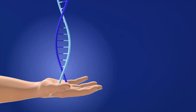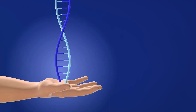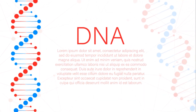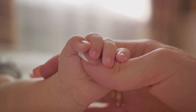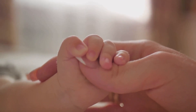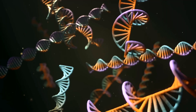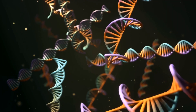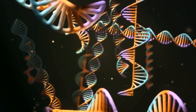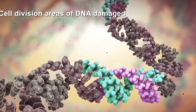When a sperm cell from the father fertilizes an egg cell from the mother, a new cell is formed. This cell contains a unique combination of chromosomes, half from each parent, and thus a unique set of DNA instructions. This DNA will guide the development of the embryo, determining its traits and characteristics. And so the cycle of life continues, with each new generation carrying a unique blend of its parents' traits, yet also containing the potential for variation and change.